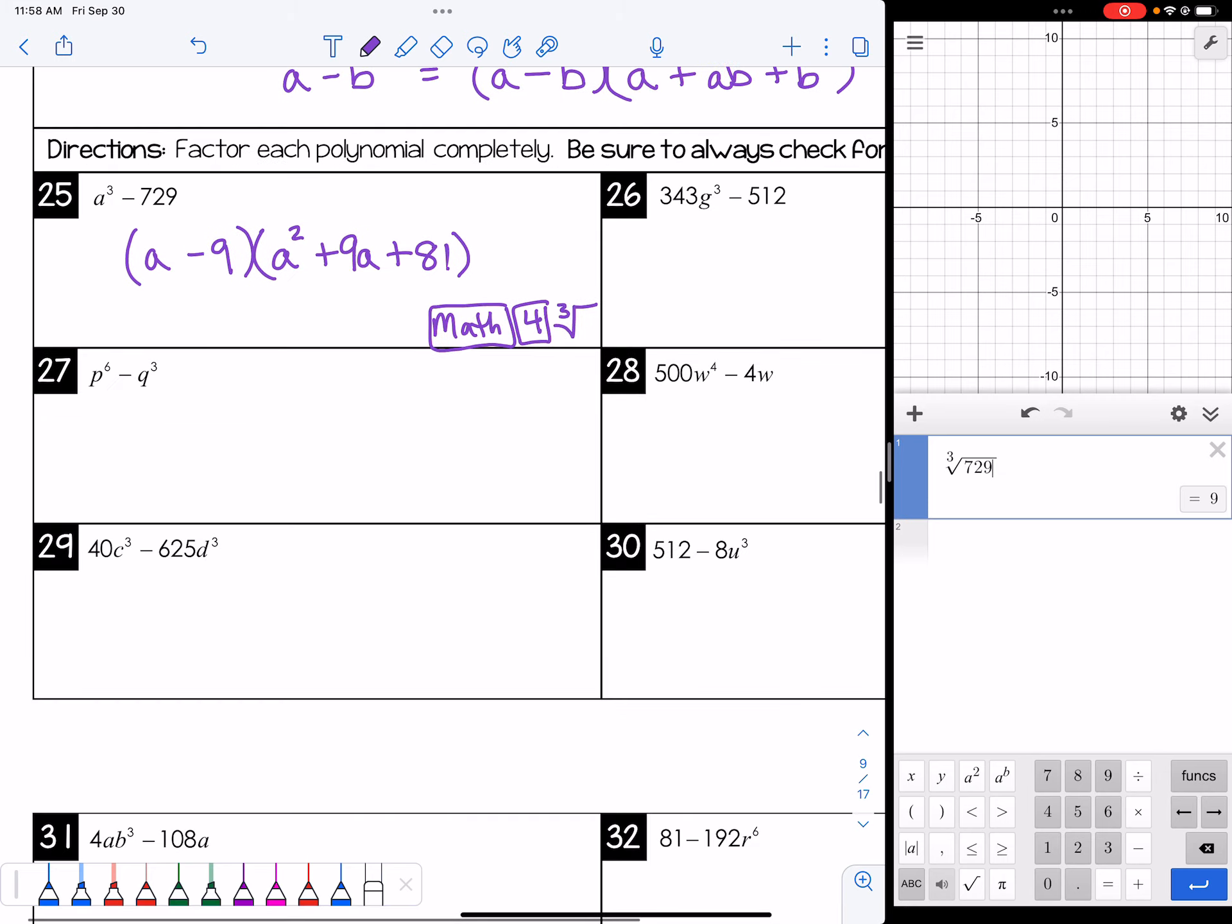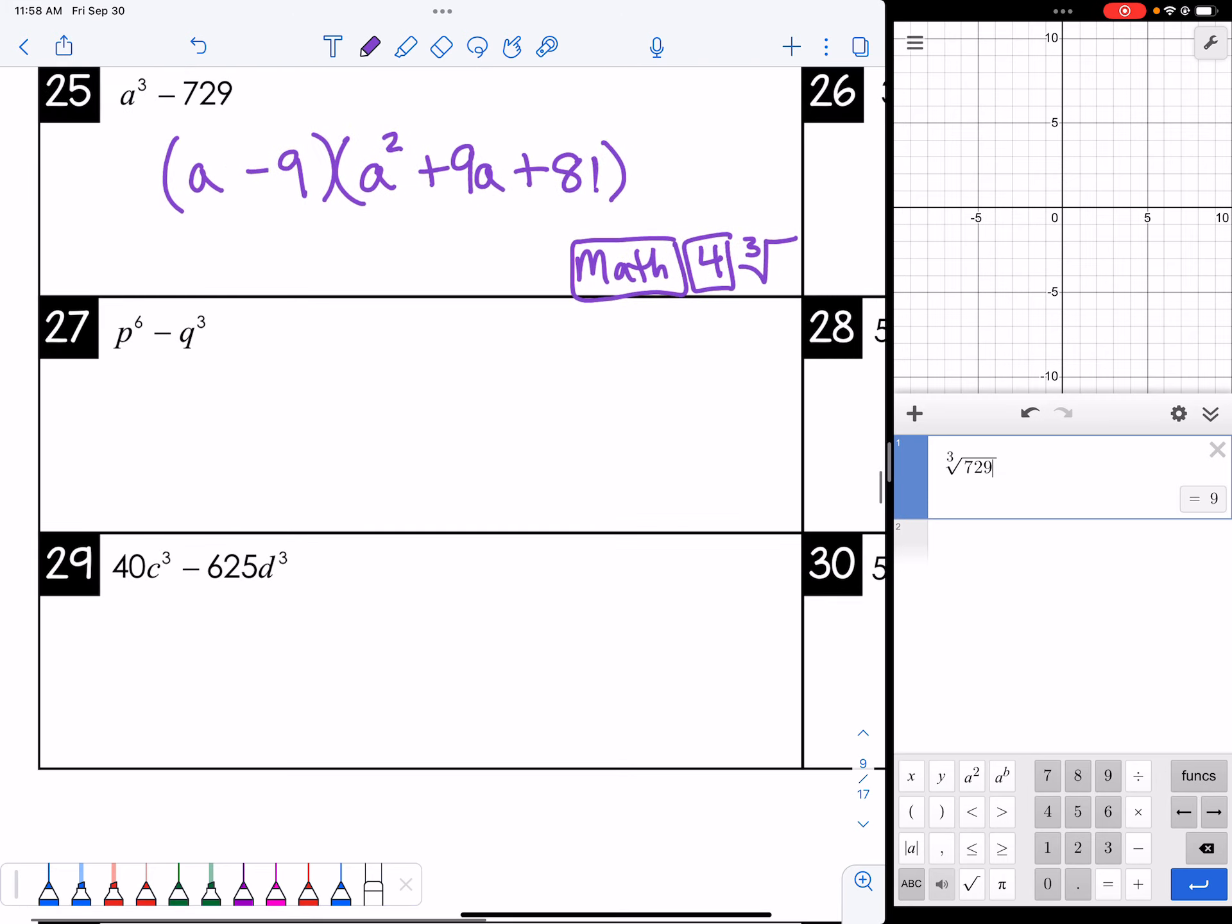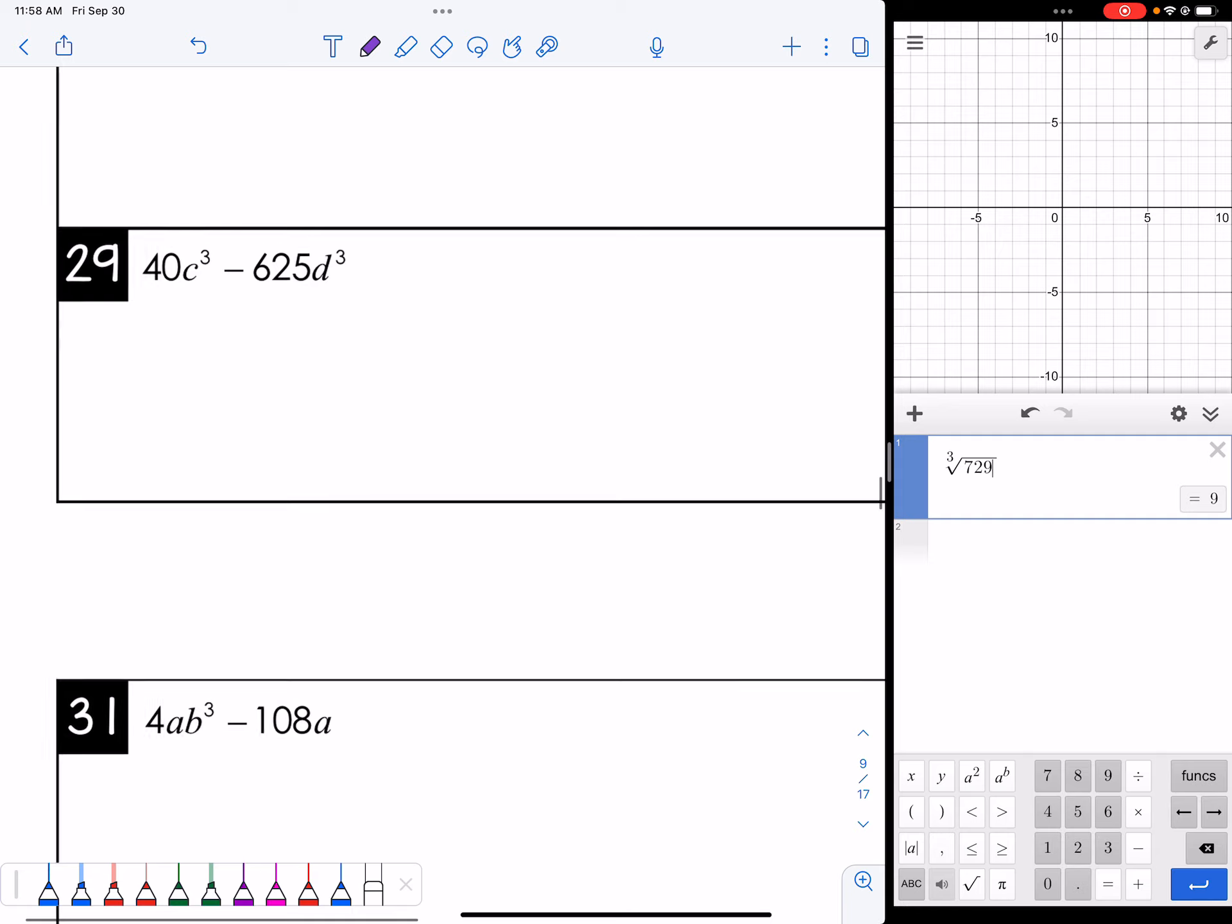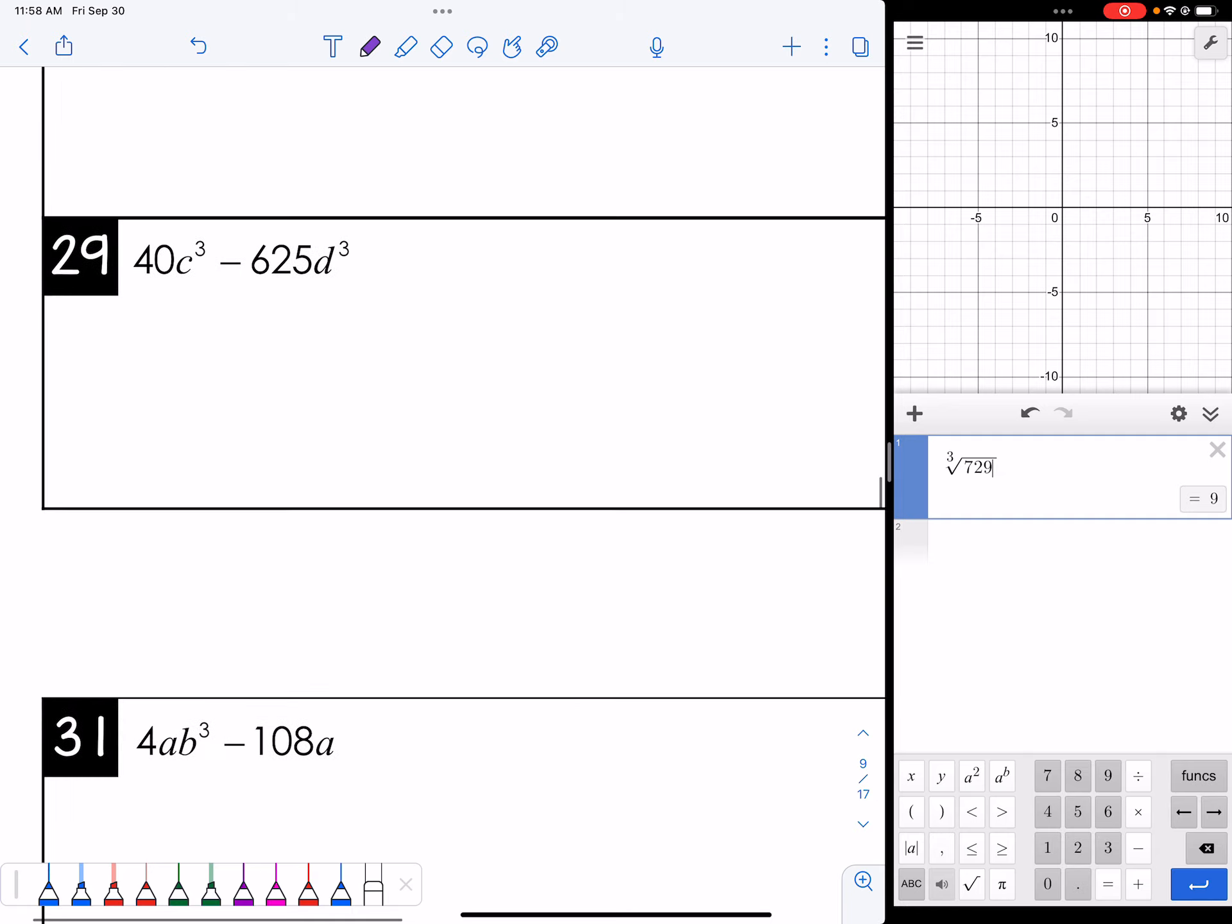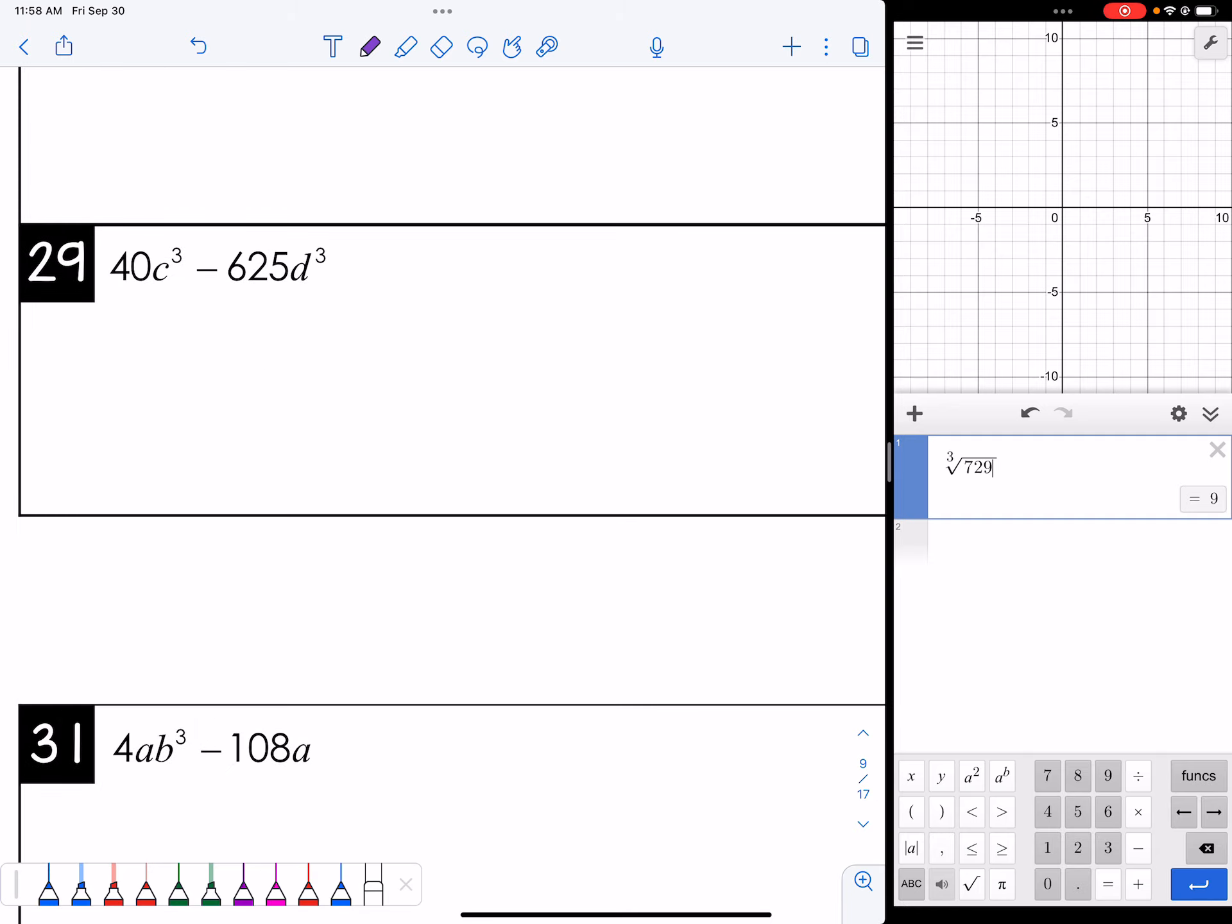Let's look at another one. Let's look at this 29. That has some personality. We got 40c³ - 625d³. So I can tell that 40 and 625 would both divide evenly by 5. So let's try taking that out and see what happens. If we take out the 5, we would have 8c³ - 125d³.